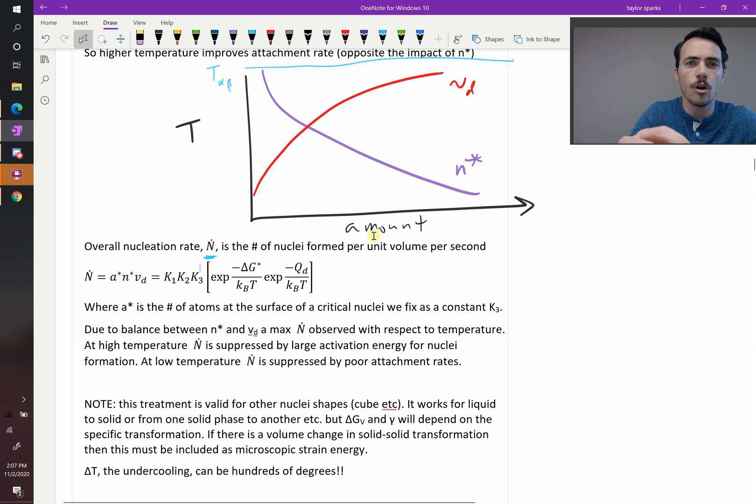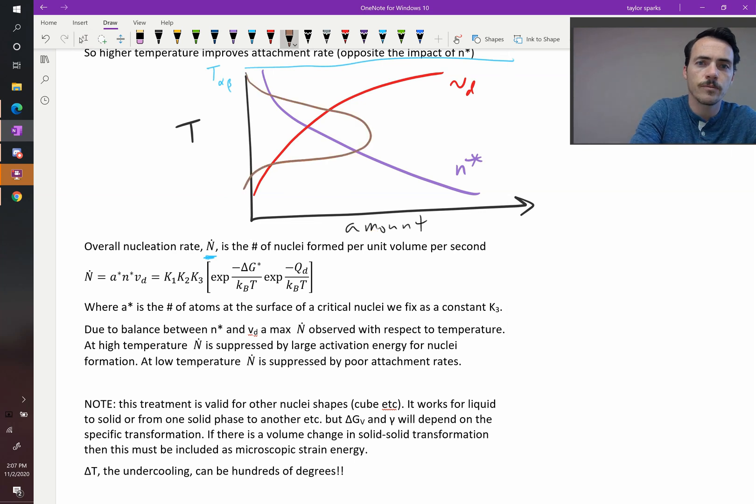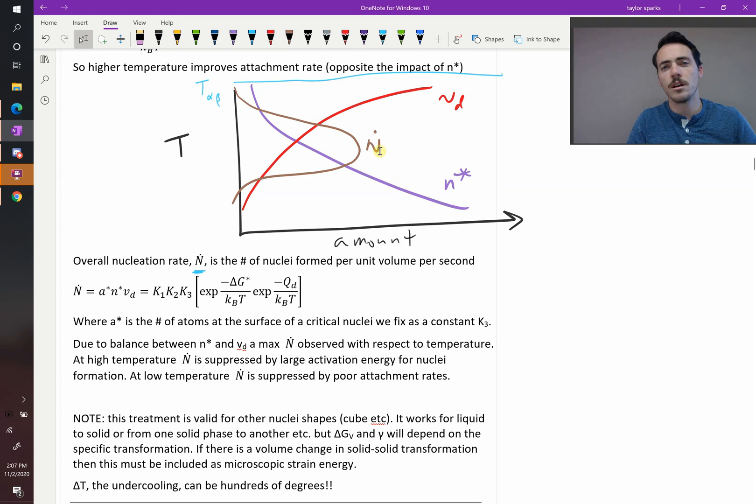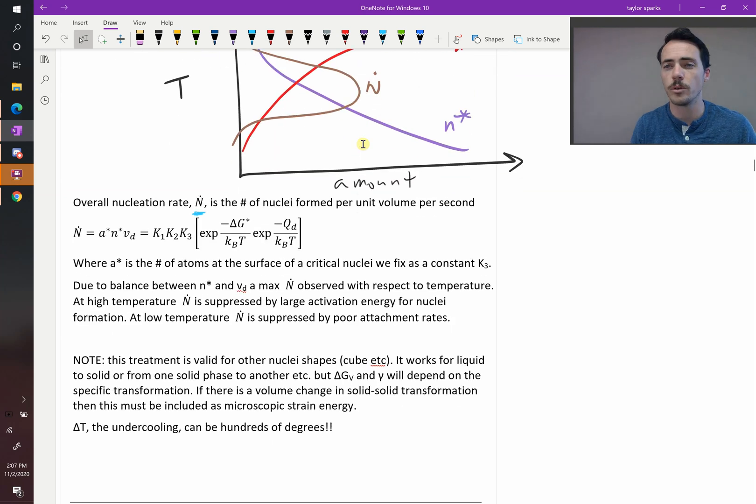So, this overall rate, and what we see is that the overall rate, the maximum, will actually look something like this. N-star, N-dot, will be at a maximum in some intermediate temperature. It's not like it's really close to the temperature of transformation, or really far below. It's going to be at some intermediate value. You will see a maximum in your nucleation rate.